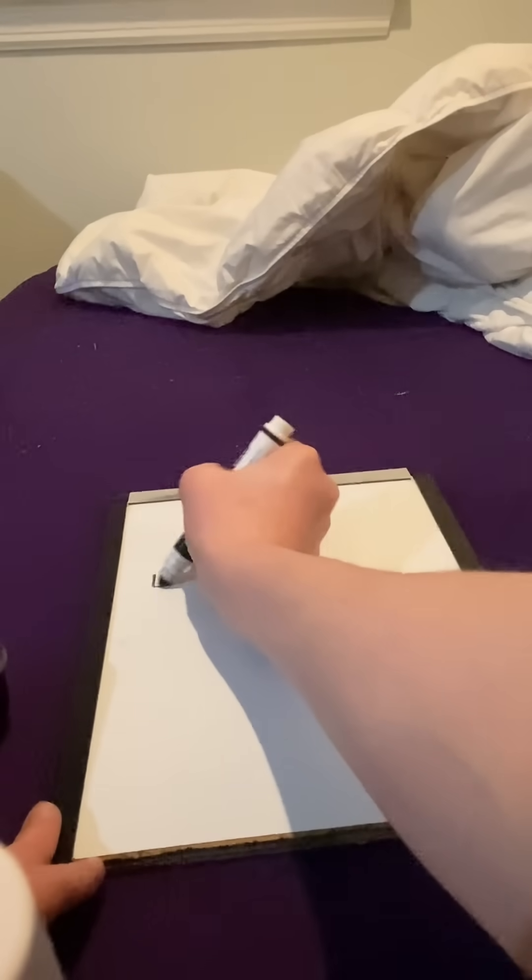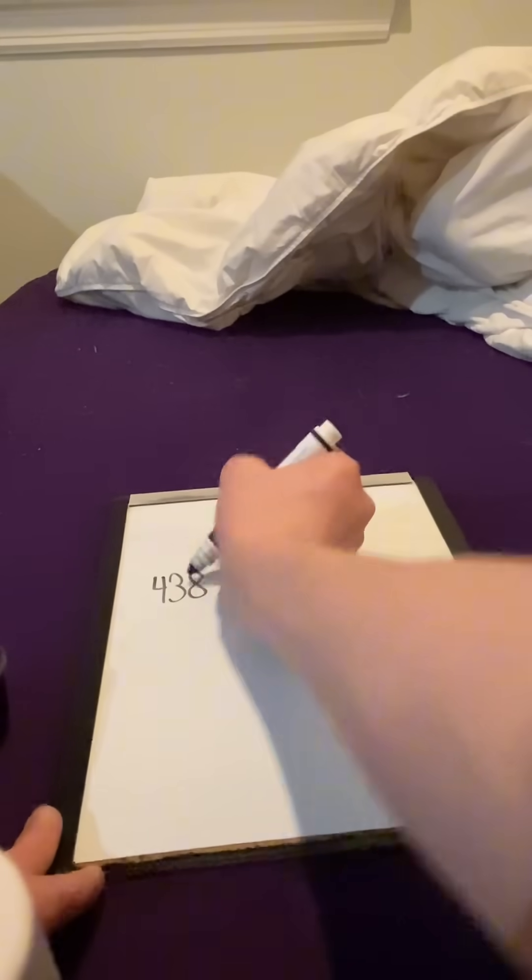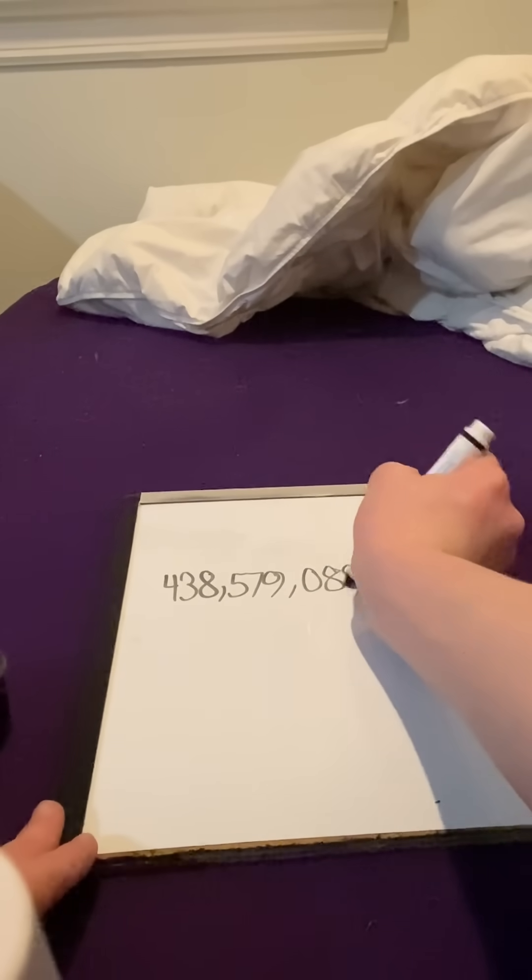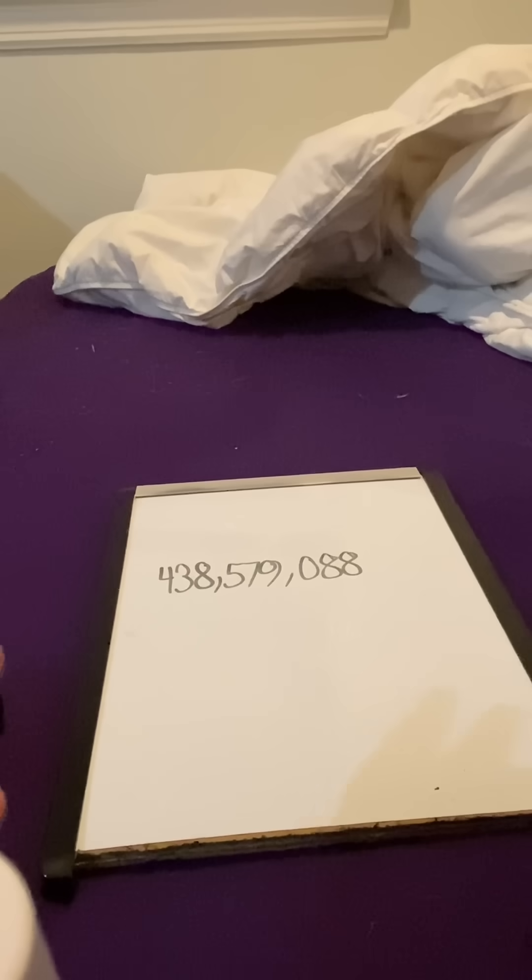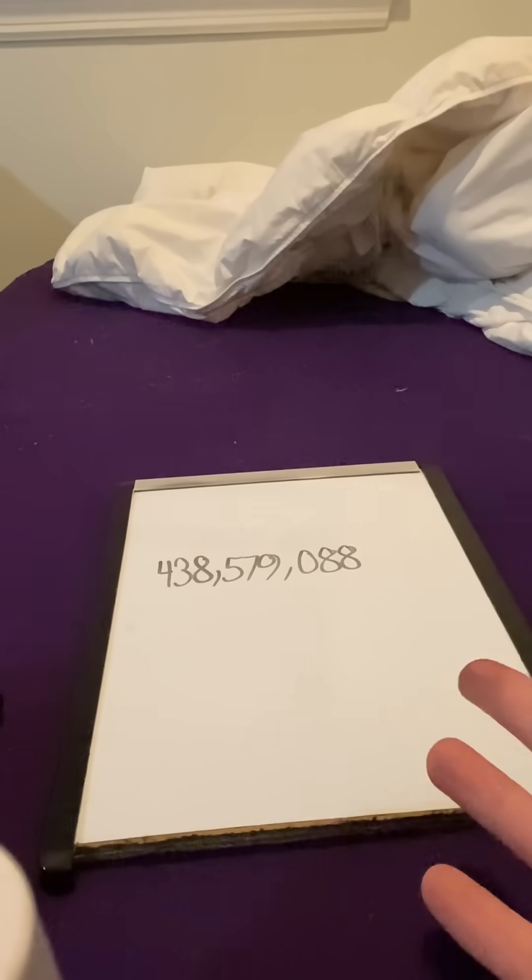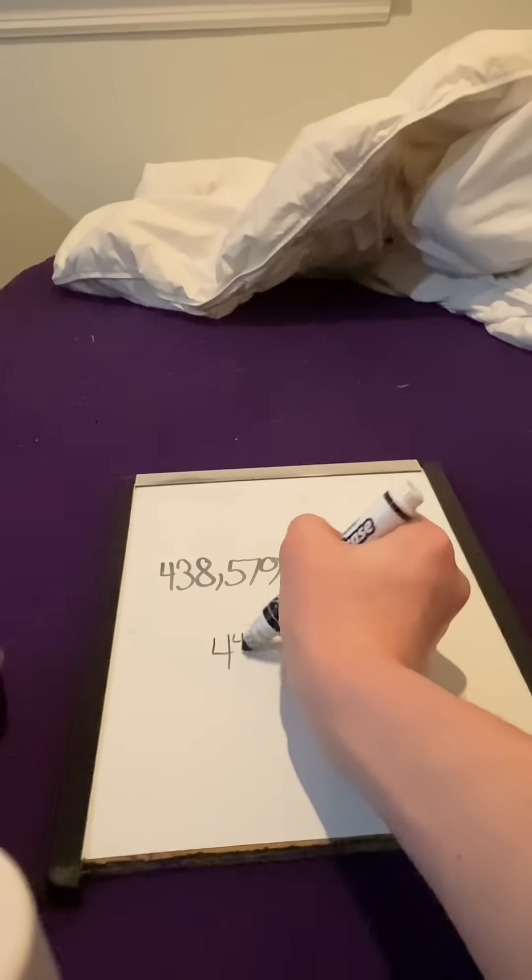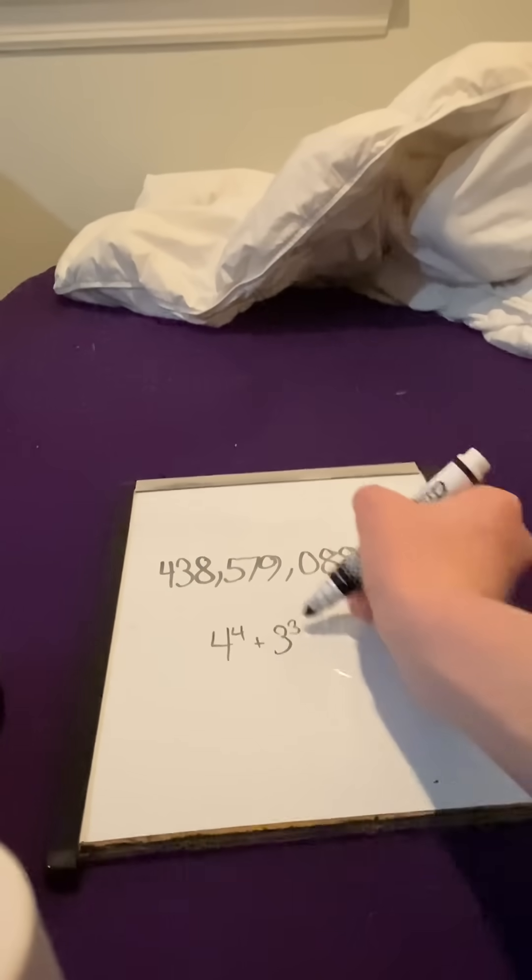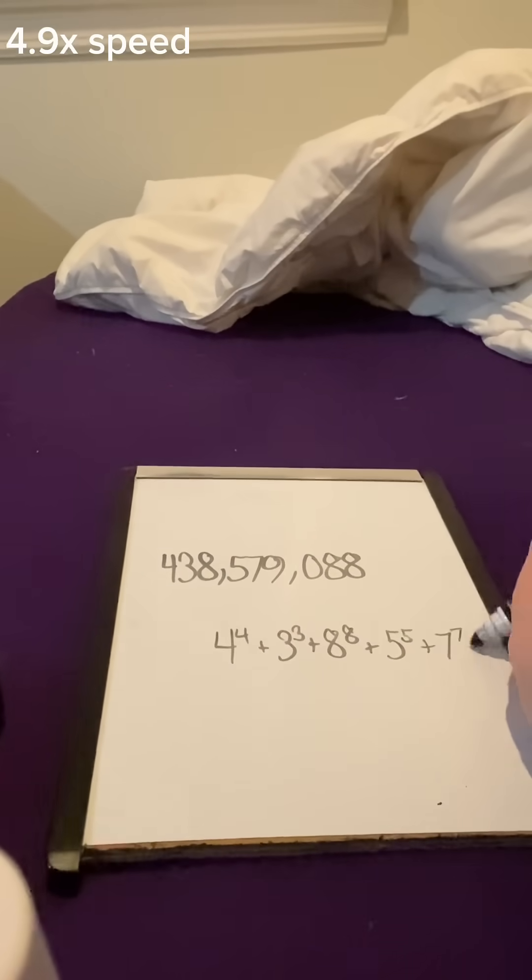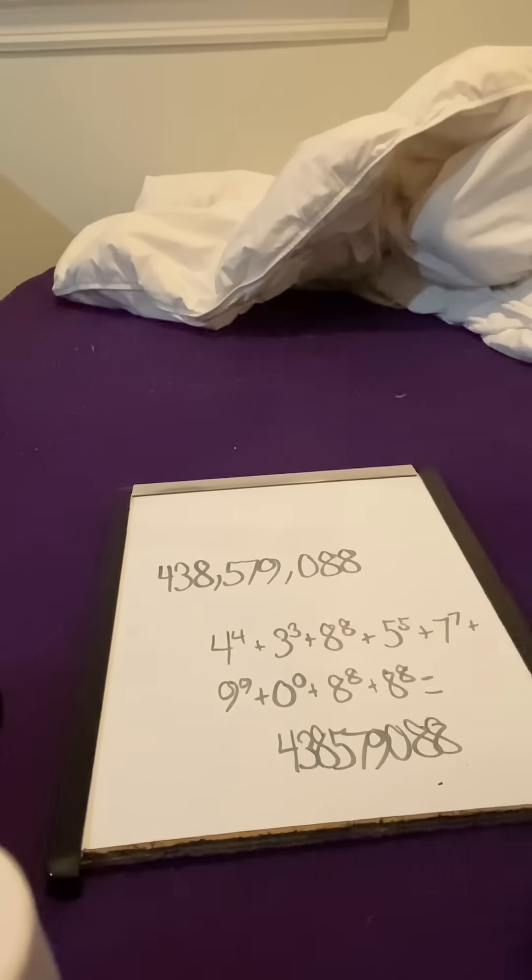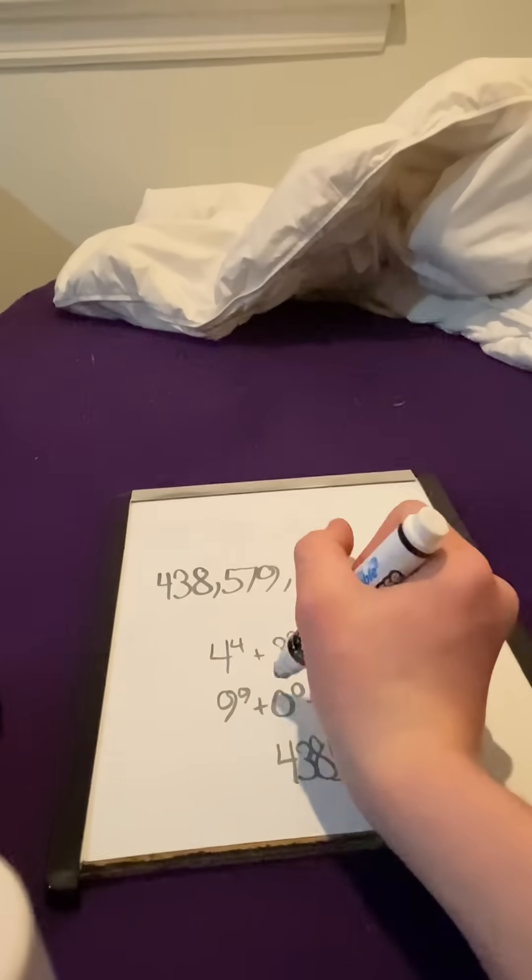...there's another number. What about 438,579,088? This number is not what you'd expect, because 4 to the 4 plus 3 to the 3 plus... Or does it? Take a look at this. There's a 0 to the 0.